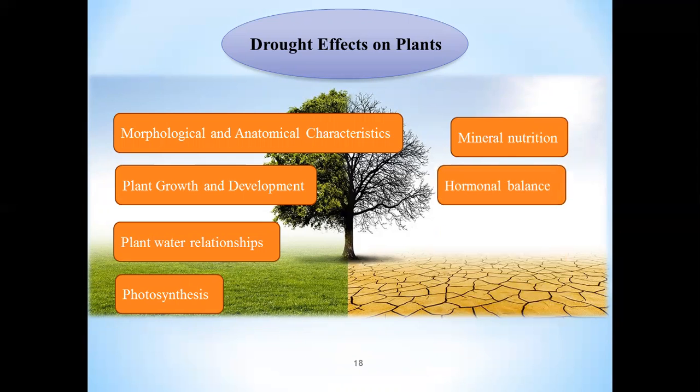Hormonal balance. Disturbance of the hormonal balance is another effect of drought on plants. In order to save time, I'll skip the details.